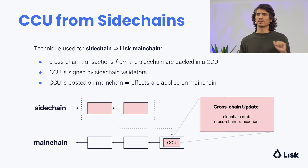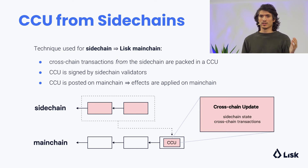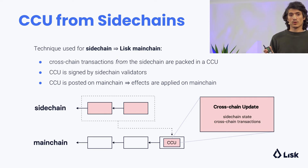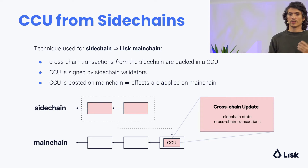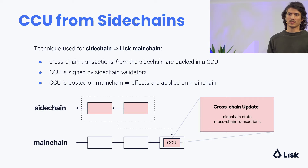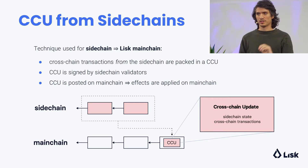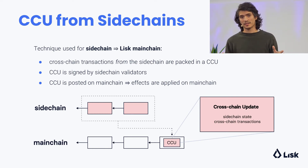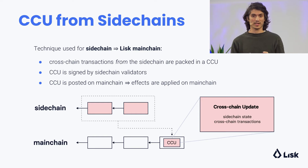In the other direction, the technique we use to have interoperability from a sidechain to the LISC main chain is cross-chain updates from the sidechain. Here, we pack all the cross-chain transactions that are coming from the sidechain. The cross-chain update is signed by the sidechain validators and then is included on the main chain where its effects are applied. The cross-chain update here in pink will contain the sidechain state and the cross-chain transactions from the sidechain.